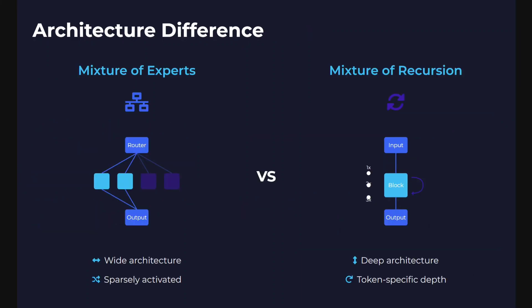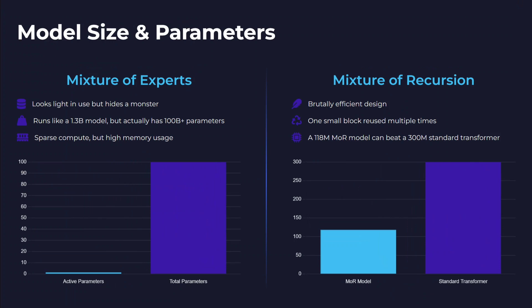Now let's look at the differences. The first is architectural. In Mixture of Experts, not the entire architecture is activated at a time — it's a wide architecture and sparsely activated. Mixture of Recursions is different: it's a deep architecture, it doesn't have multiple branches, and it has token-specific depth. Depending on the token, how many blocks should be repeated is decided. The entire architecture does get used, but how many times a block repeats depends on the token.